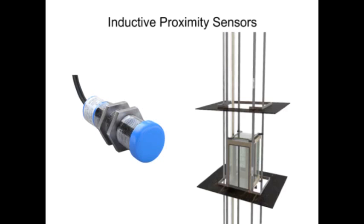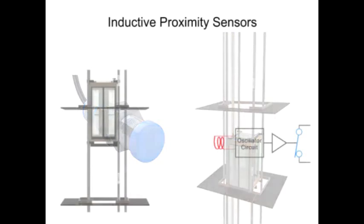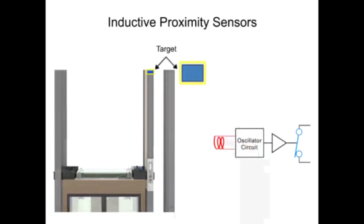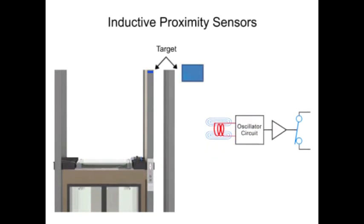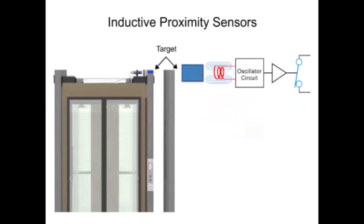Inductive sensors can detect a target from 0.5mm to 40mm. They only detect metallic targets and therefore use a magnetic field to detect its presence. When a ferrous metal material enters the magnetic field, electrical currents known as eddy currents are induced on the metal surface. These eddy currents induce a power loss within the oscillator circuit, causing a reduction in the amplitude of the oscillations. This is known as the echo or eddy current killed oscillator principle.